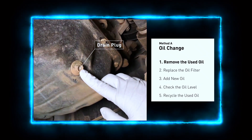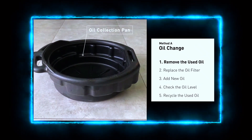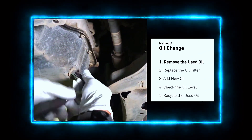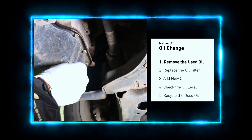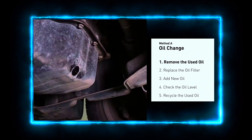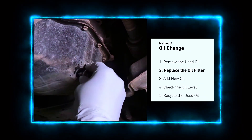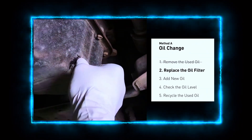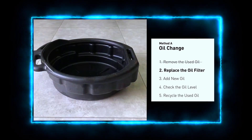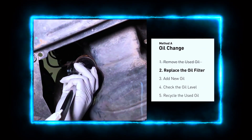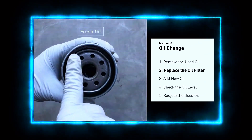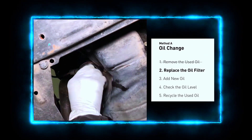First, locate the oil drain plug — it's usually on the bottom of the engine. Use your socket set to loosen the plug. Place an oil drain pan underneath to catch the old oil. Carefully remove the drain plug and let the old oil drain completely. While the oil is draining, it's a good time to inspect the plug and washer for any signs of wear or damage. Now let's replace the oil filter — using your oil filter wrench, loosen and remove the old filter.